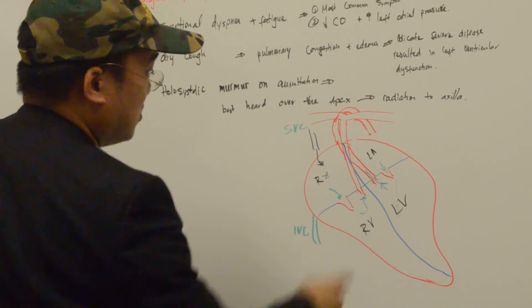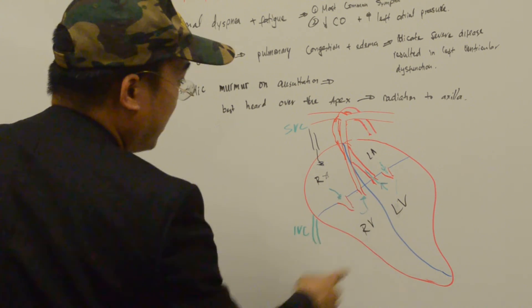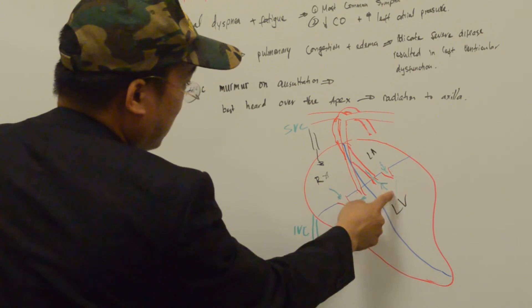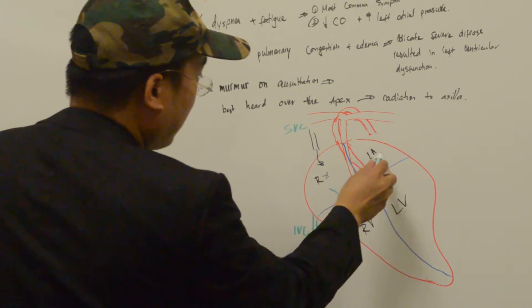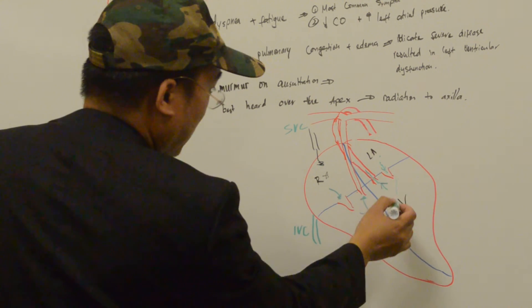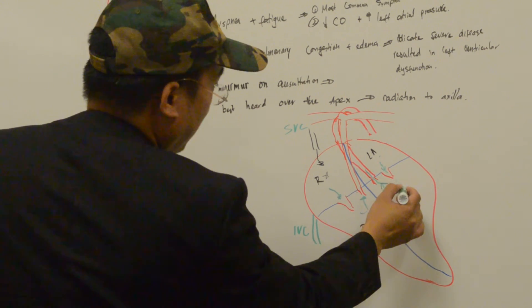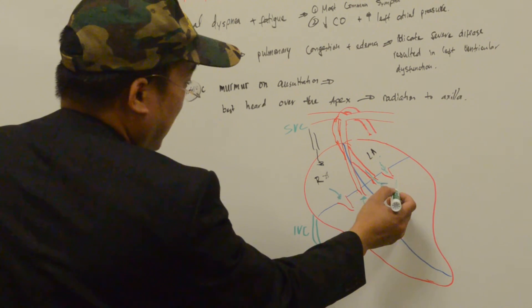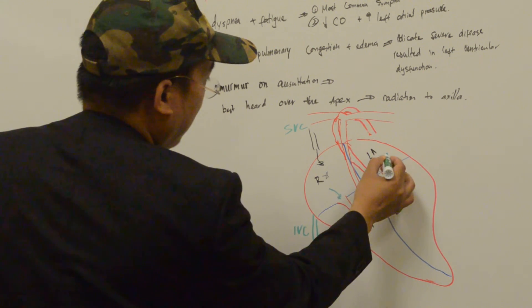Mitral regurgitation is caused by the backflow of blood through the mitral valve. Instead of flowing forward from the left atrium into the left ventricle, in mitral regurgitation blood flows backward through this valve.